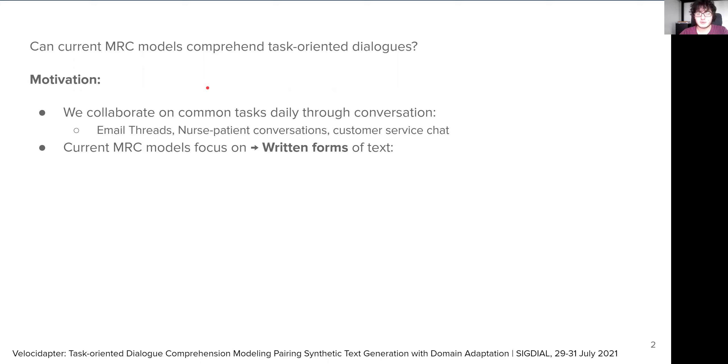However, current machine reading comprehension models only focus on written forms of text like news or Wikipedia articles, and these models do not perform as well on conversational data. So we actually need to find a way to train or adapt our models on this specific form of task. However, we don't have enough dialogue comprehension data.